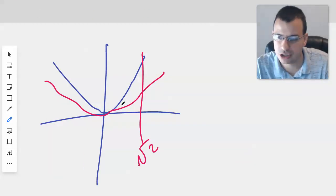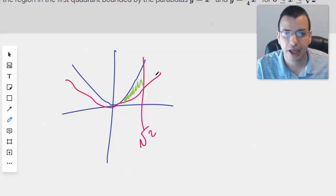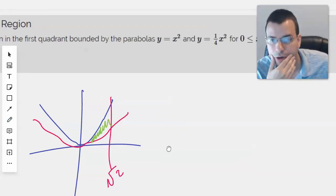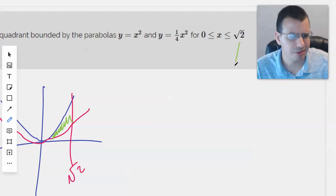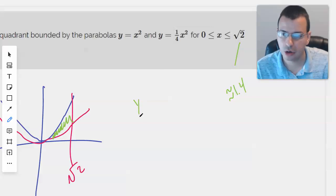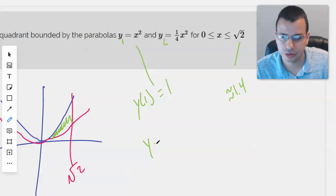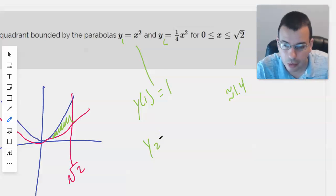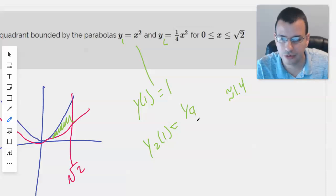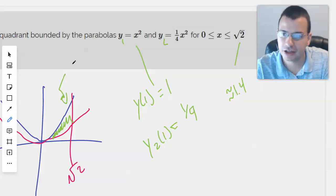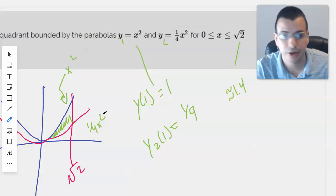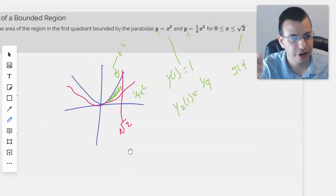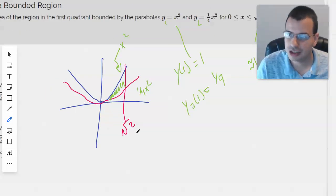It's asking for the area region bounded between the two, and so we need to find out which one is bigger. Square root of two is like 1.4 maybe? So if we put in 1, y of 1 for this we'll get 1. We'll call this y1, call this y2. Y2 of 1 would be one fourth. So I will postulate that this is x squared and this is one fourth x squared. So what I'm going to do then is I'm going to find the area of the top one minus the area of the bottom one, and that will give us the region bounded.